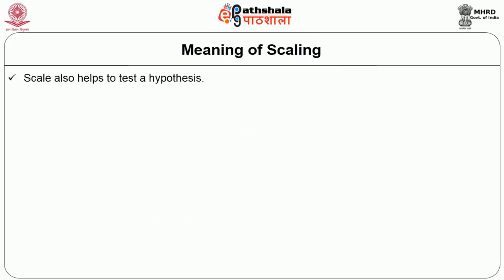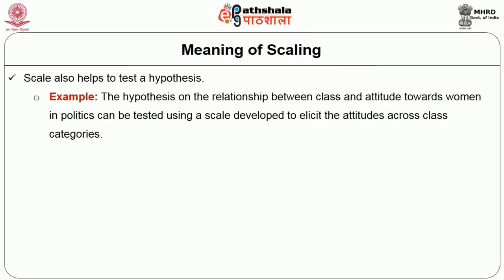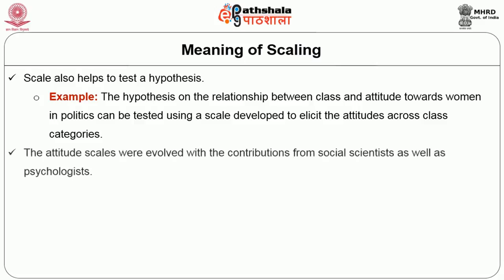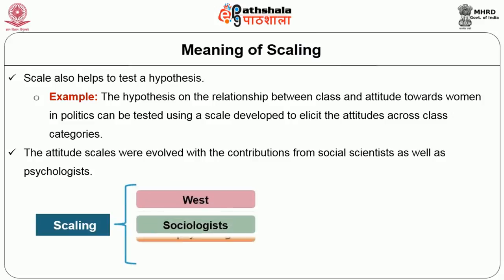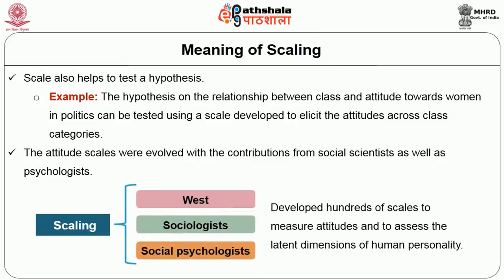Scale also helps to test a hypothesis. For example, the hypothesis on the relationship between class and attitude towards women in politics can be tested using a scale developed to elicit attitudes across class categories. Over a period, attitude scales were evolved with contributions from social scientists as well as psychologists. Since scaling appeared in the 1930s in the west, sociologists and social psychologists have developed hundreds of scales to measure attitudes and to assess the latent dimensions of human personality.